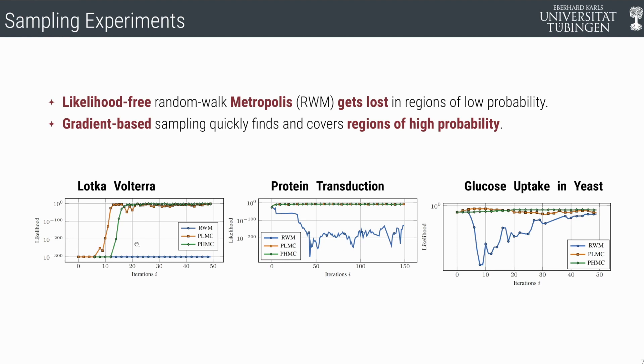We would like to see that these lines cover and stay in regions of high likelihood. We can see that this is the case for the gradient-based versions for the orange and green one. The blue one, the likelihood-free one, just gets lost in regions of low probability, falls off regions of high probability. The orange and green ones perform a lot better. The gradients for sampling seem to help in every case. That's a successful set of experiments.